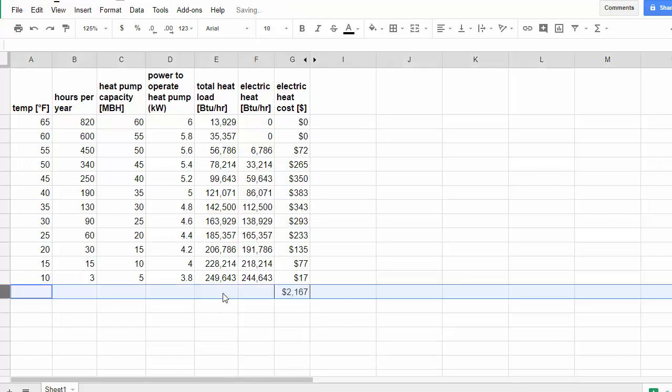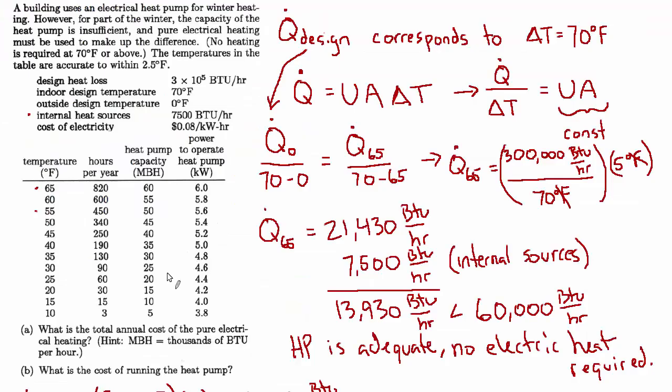And we get these values. Take the sum, $2,167 per year to run the electric heat. And that is our answer for part A.